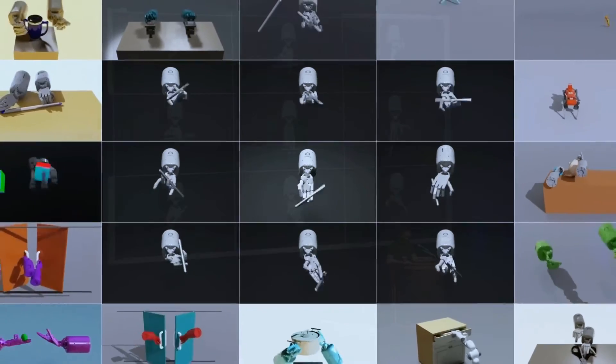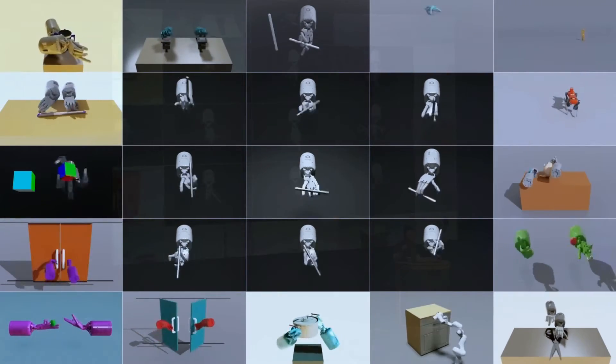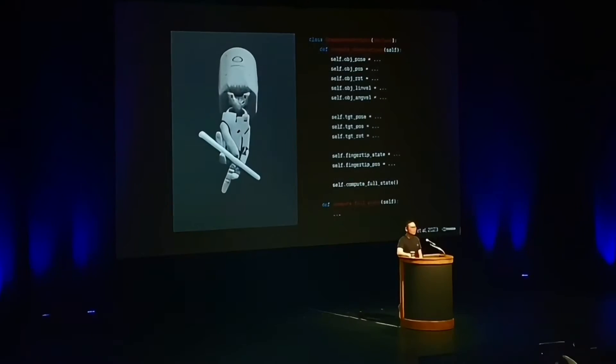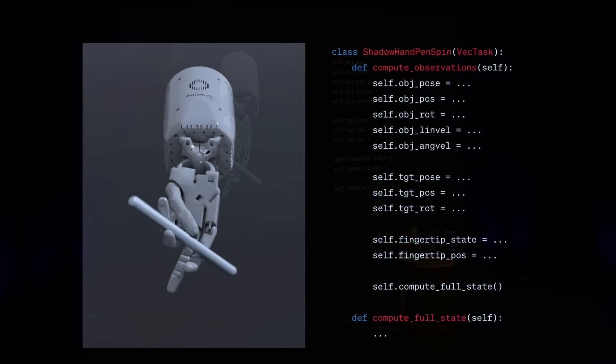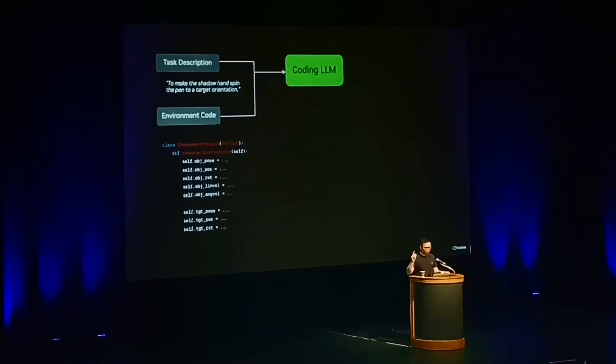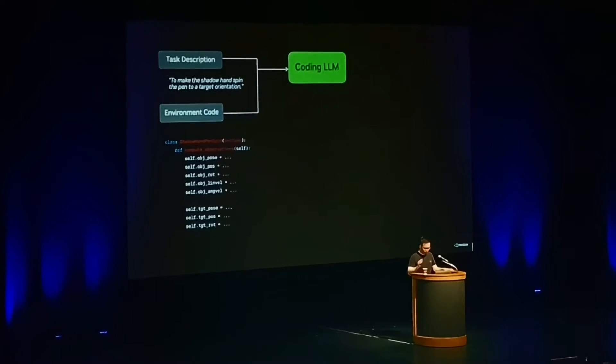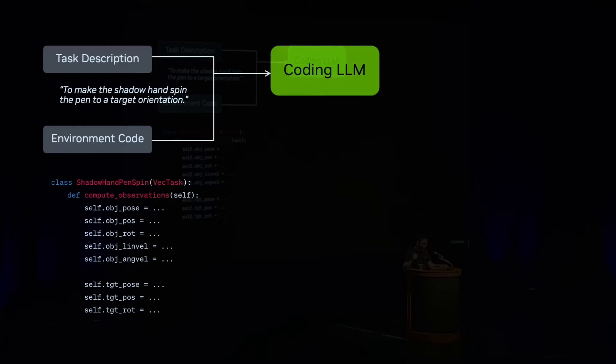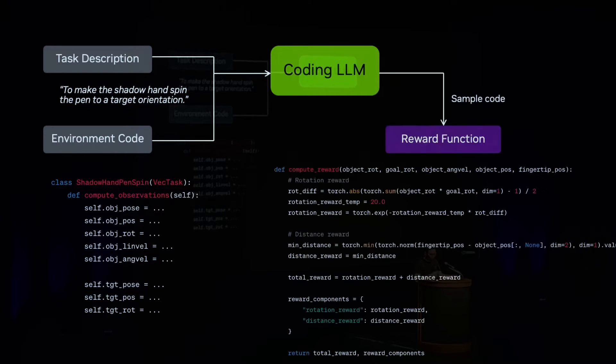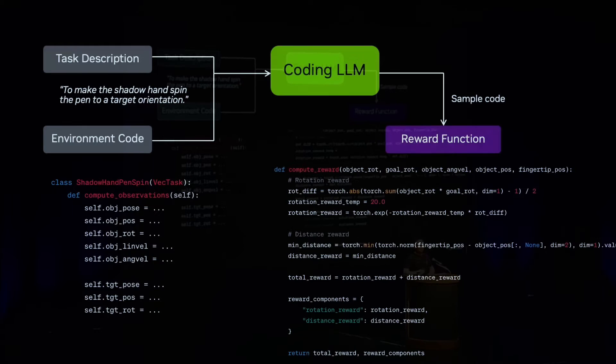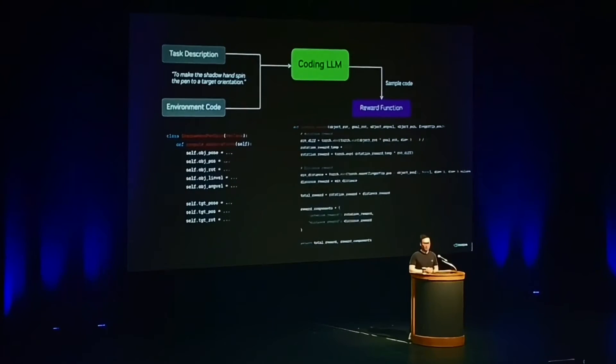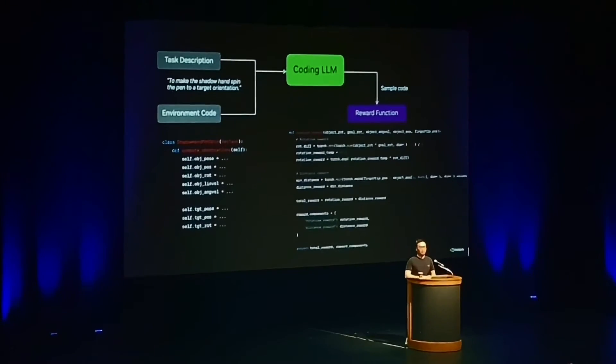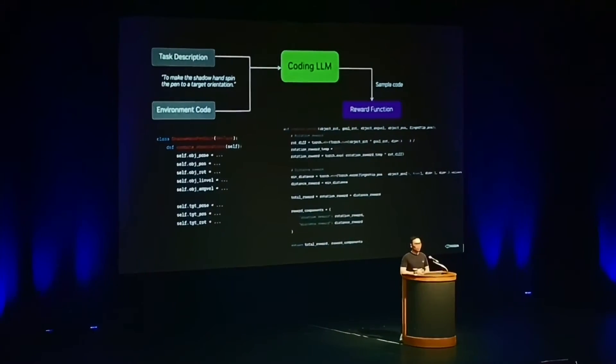This is Eureka, an agent that achieves robot dexterity at superhuman level. The idea is Isaac Sim has a Python API to construct the training environments like this five-finger robot hand. The first step of Eureka is to pass the environment code and the task description as context to GPT-4. The task here is written in natural language to make the hand spin the pan to target positions. Then Eureka samples a reward function. Normally this reward function is engineered by humans and actually expert humans who are very familiar with physics simulation. Now Eureka can automate it.